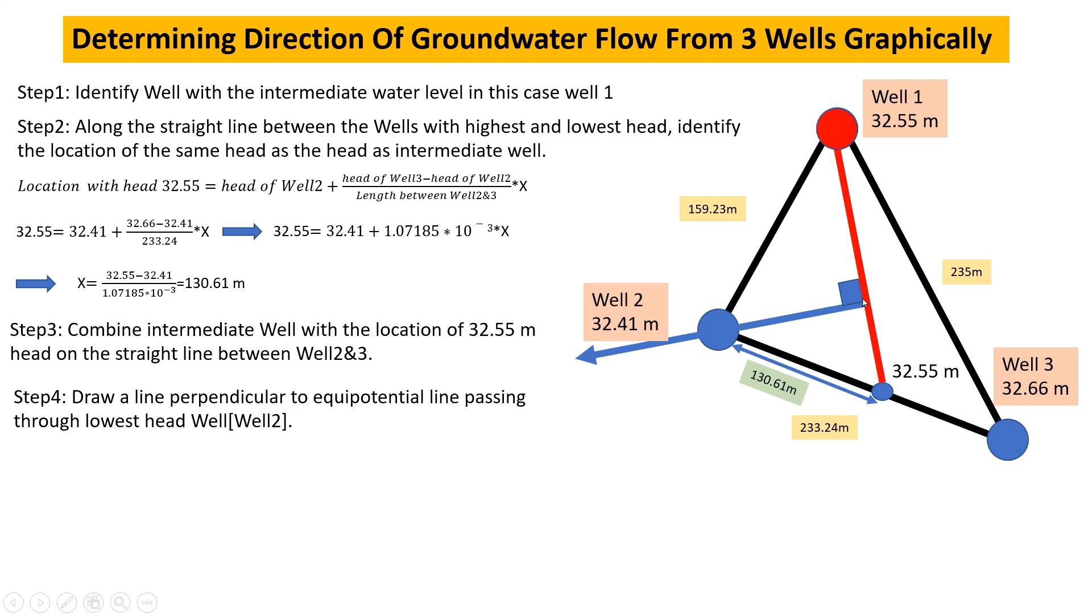Now we draw a perpendicular line to the equipotential line passing through Well 2. This line represents the direction of groundwater flow. We can now determine the hydraulic gradient, which is the slope of this line.